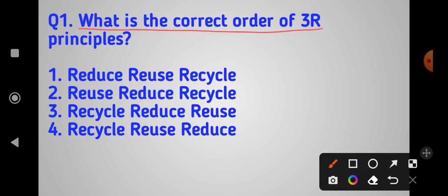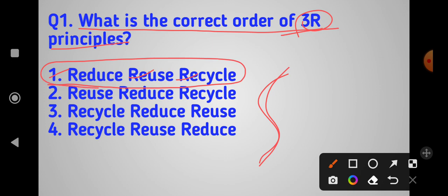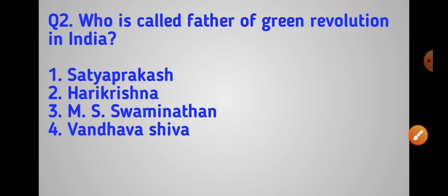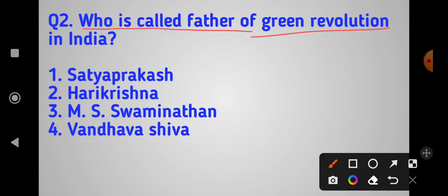What is the correct order of the 3R principles? The correct order is reduce, reuse and recycle. So option number one is correct - reduce, reuse, recycle. Next question: who is called father of green revolution in India? The answer is Dr. MS Swaminathan.